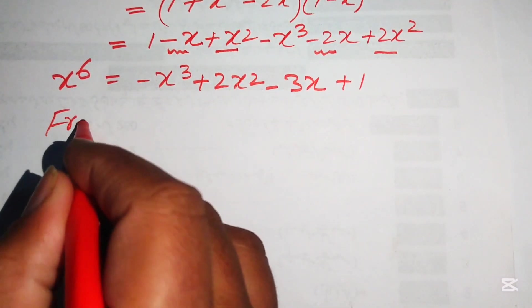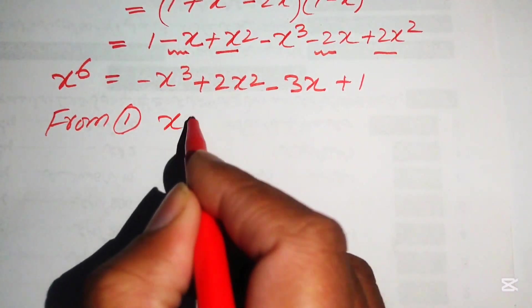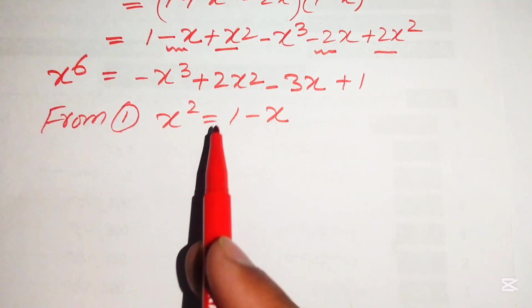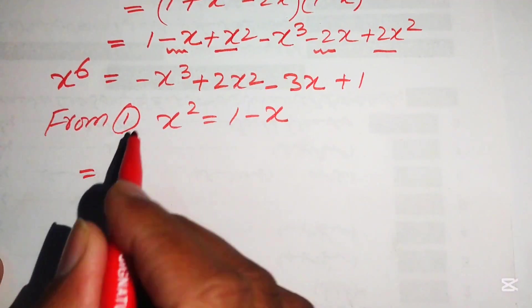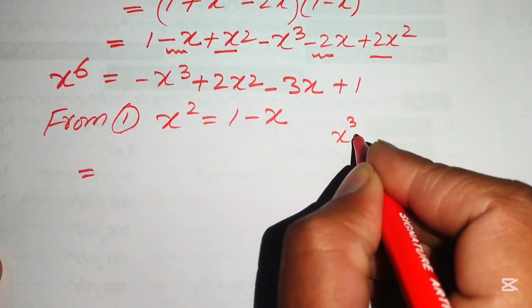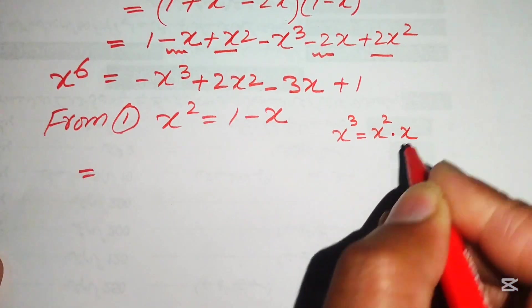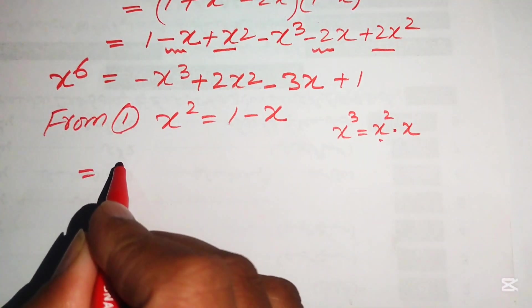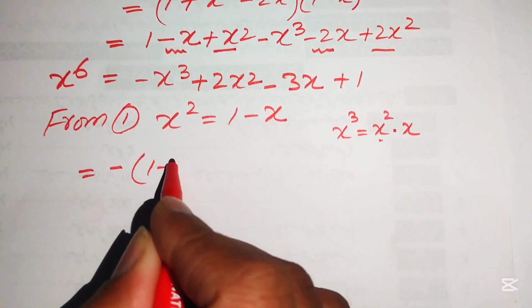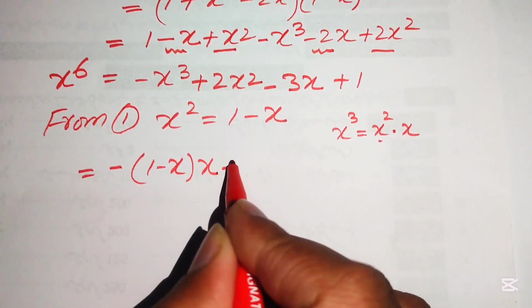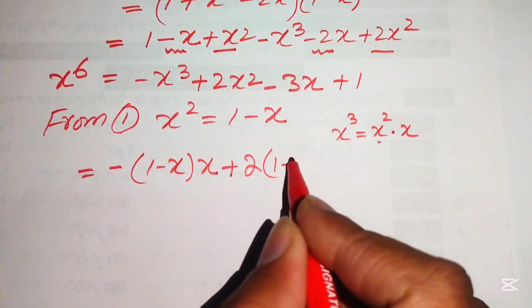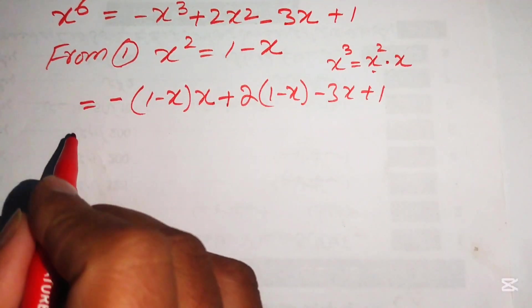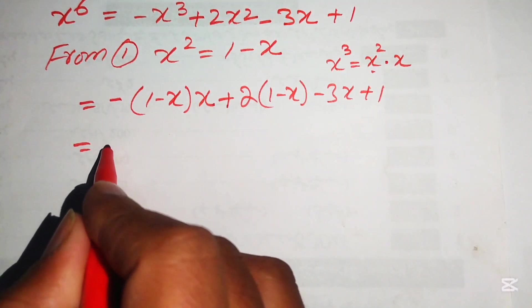From Equation 1, x² = 1 - x. To substitute for x³, we write x³ = x² · x = (1 - x)·x. Substituting into x⁶ = -x³ + 3x² - 3x + 1: the -x³ term becomes -(1 - x)·x = -x + x², and the 3x² term becomes 3(1 - x). This gives x⁶ = (-x + x²) + 3(1 - x) - 3x + 1.